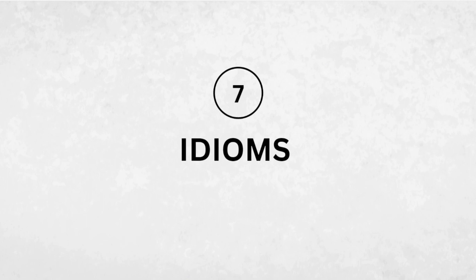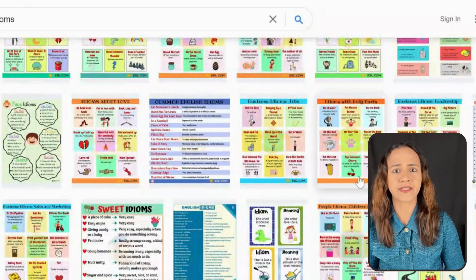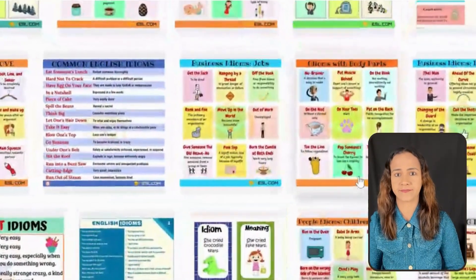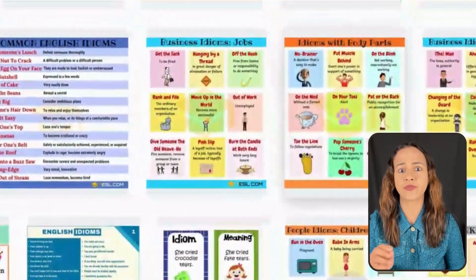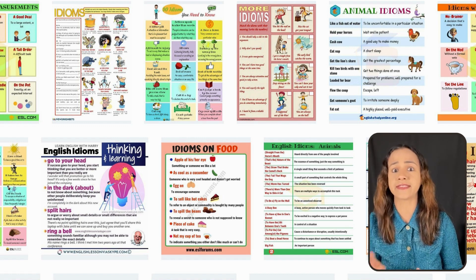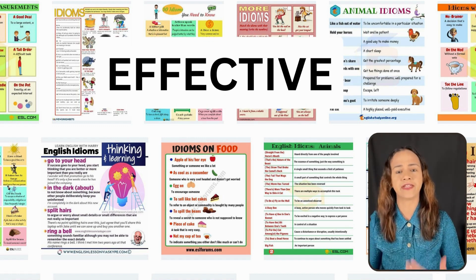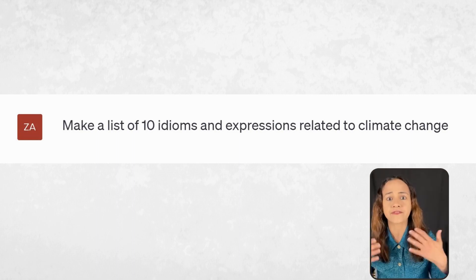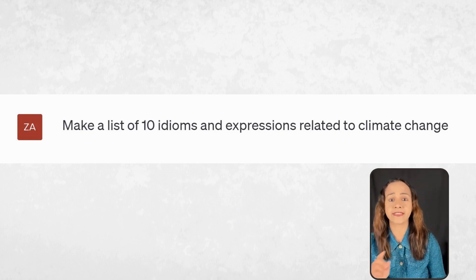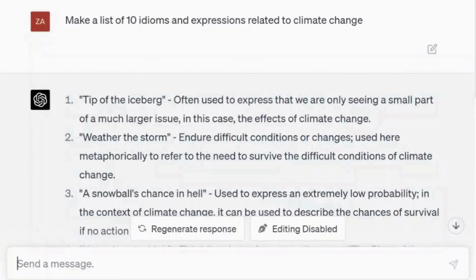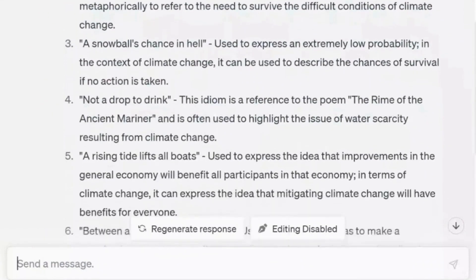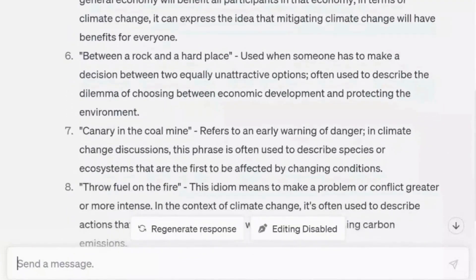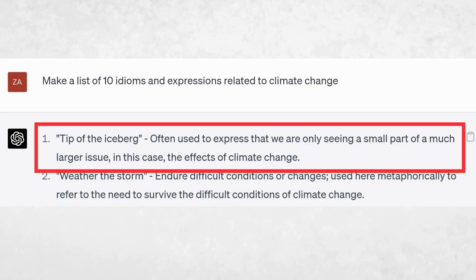Number seven: idioms and expressions. Idioms and expressions are commonly used in everyday conversations. By teaching them, learners become better equipped to understand and use these language elements, leading to more effective and natural communication. The prompt: make a list of 10 idioms and expressions related to climate change. For each expression in the results, it also shows us how it can be used. Let's read number one: tip of the iceberg — often used to express that we are only seeing a small part of a much larger issue, in this case the effects of climate change.